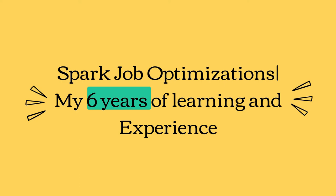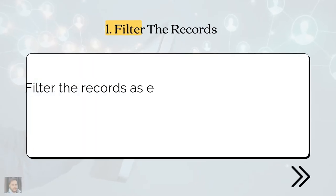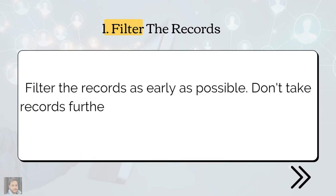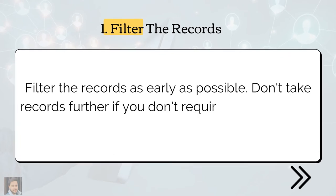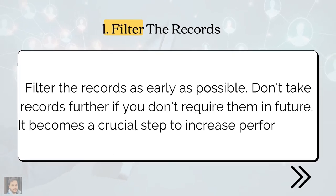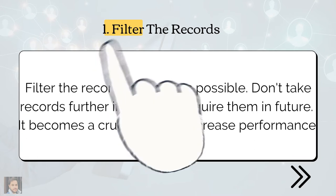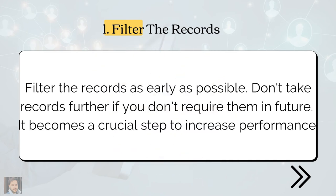The first suggestion is: filter the data as soon as possible. Very basic and simple — don't carry records further if you don't need them. The first mistake I made as a novice was, whether I needed it or not, I always read the full data from all the tables. Don't do this. Many of you will say, 'Mayank, we don't need to worry about this because the Catalyst optimizer handles it for us.'